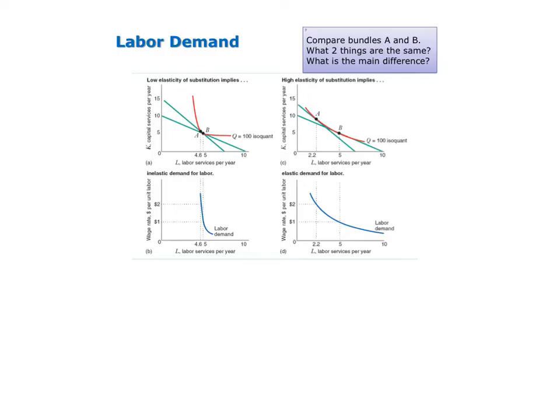The graph on the right, on the other hand, shows production where input substitutability is higher, so the isoquant is not as curvy, and therefore we see that the labor demand curve is relatively flat or more elastic.